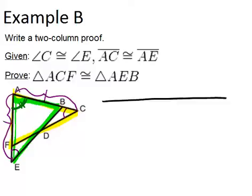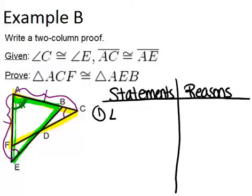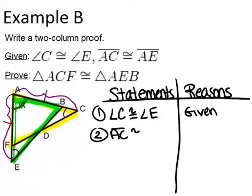So let's set up our two columns with statements on the left and reasons on the right. And remember, you always start with the given information, which was that angle C is congruent to angle E, which is given, and AC is congruent to AE, which is given.